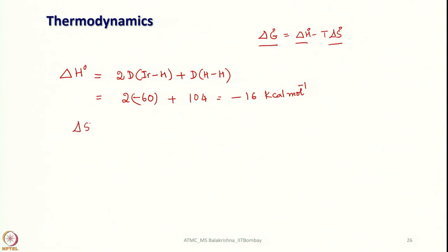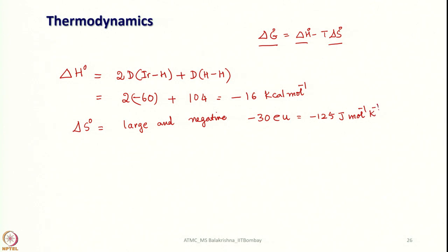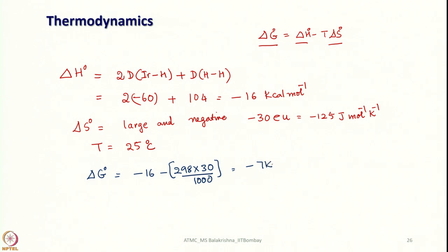Now we calculate ΔS. Looking at the reaction, ΔS is large and negative because gaseous H₂ is disappearing and in its place we are getting a solid. This is very large and negative — approximately −30 entropy units, equivalent to −125 J·mol⁻¹·K⁻¹. At 25°C, incorporating this to calculate ΔG gives: −16 − (298 × 30)/1000 = approximately −7 kcal/mol.